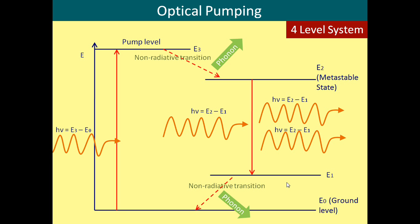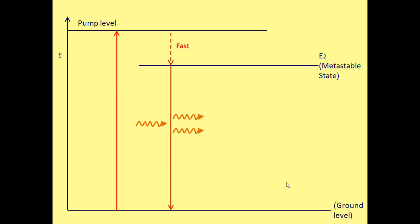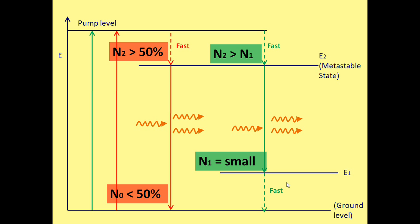But why does this make a four-level system more efficient than a three-level system? For a population inversion, the number of atoms at the higher energy level has to be greater than the number at the lower energy level. If the lower energy level is the ground level, such as in a three-level system, then more than 50% of the atoms in the entire medium need to be at a higher energy level. In a four-level system, we change the lower level from the ground level to another energy level slightly higher. As soon as an atom goes down to this level, it rapidly undergoes a non-radiative transition to the ground level, meaning the number of atoms at E1 is very small. If the number of atoms at E1 is small, then the number of atoms in the metastable state can also be small and still create a population inversion, as long as it is higher than at E1. Therefore, fewer atoms need to be pumped up to the pump level, and less power is required.